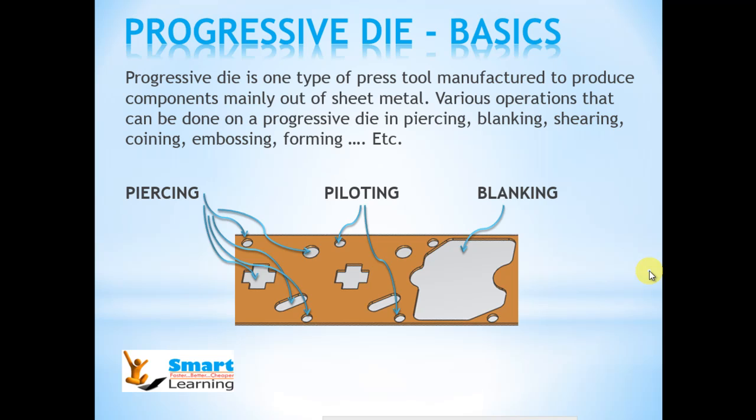What actually is a Progressive Die? A Progressive Die is one type of press tool manufactured to produce components mainly out of sheet metal.